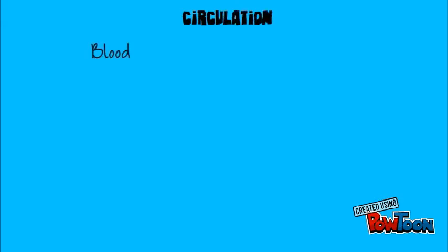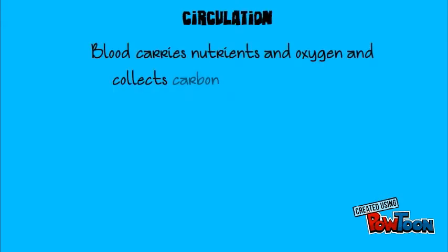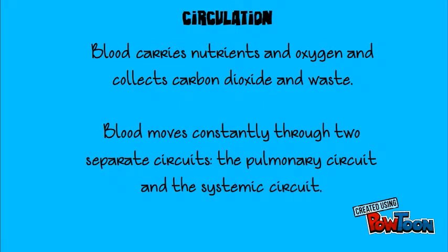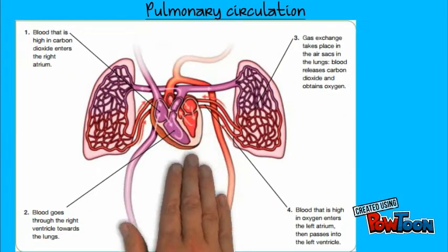Circulation. Blood carries nutrients and oxygen and collects carbon dioxide and waste. Blood moves constantly through two separate circuits: the pulmonary circuit and the systematic circuit. Pulmonary circulation.